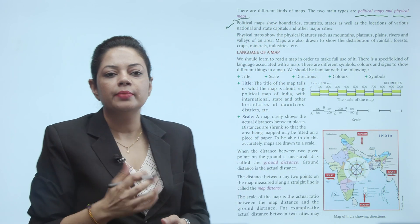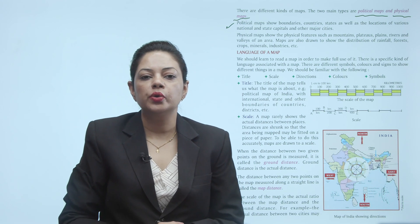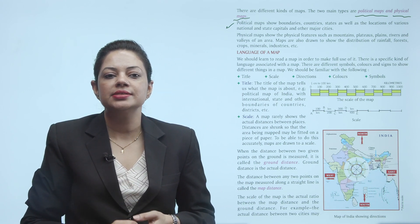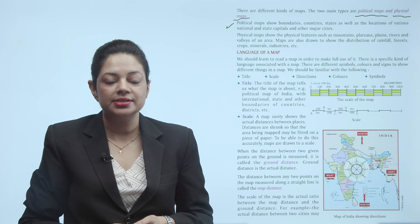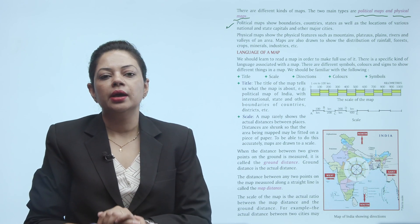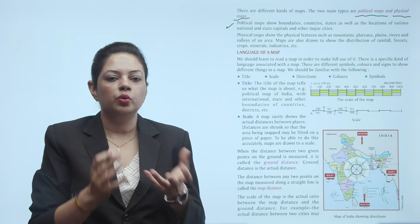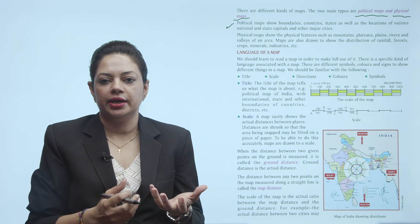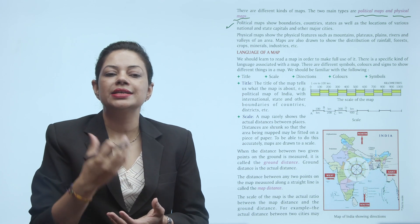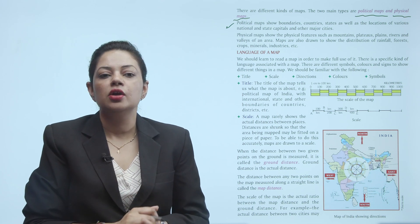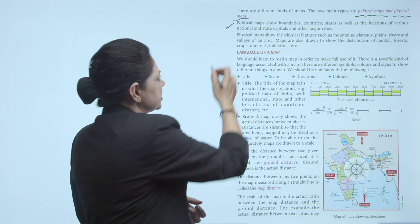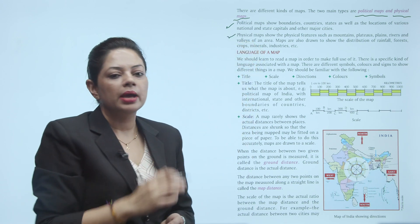A political map shows boundaries, countries, states as well as the location of various national and state capitals and other major cities. Jo bhi hamare desh ke baare mein — uski boundaries, uski states kahan hain, unke baare mein jo show karta hai, kaunsi jagah, kaunsi cheez ki location kahan hai — woh political maps hote hain.